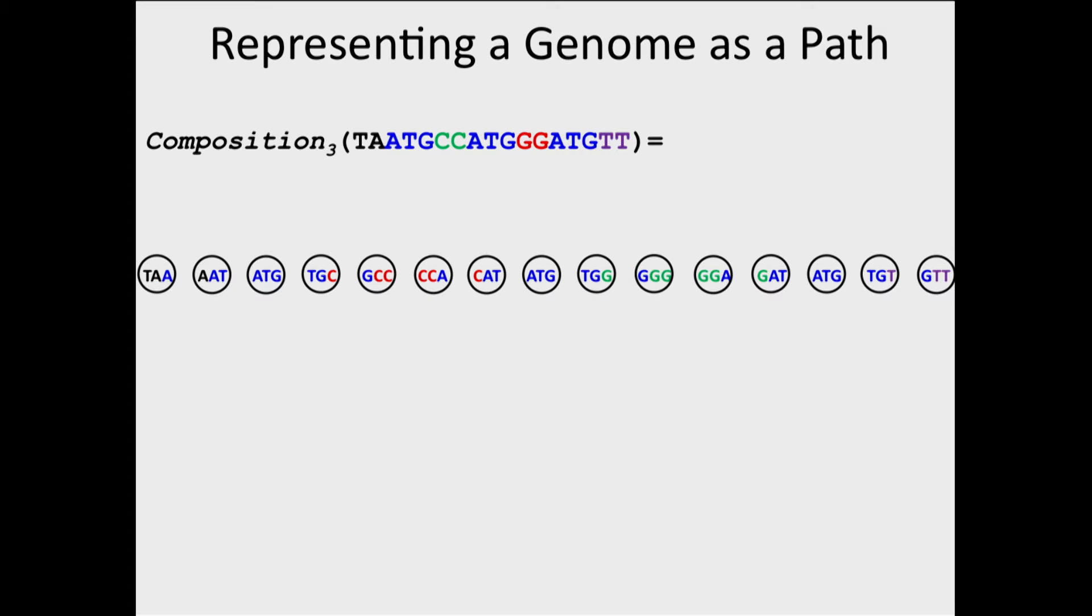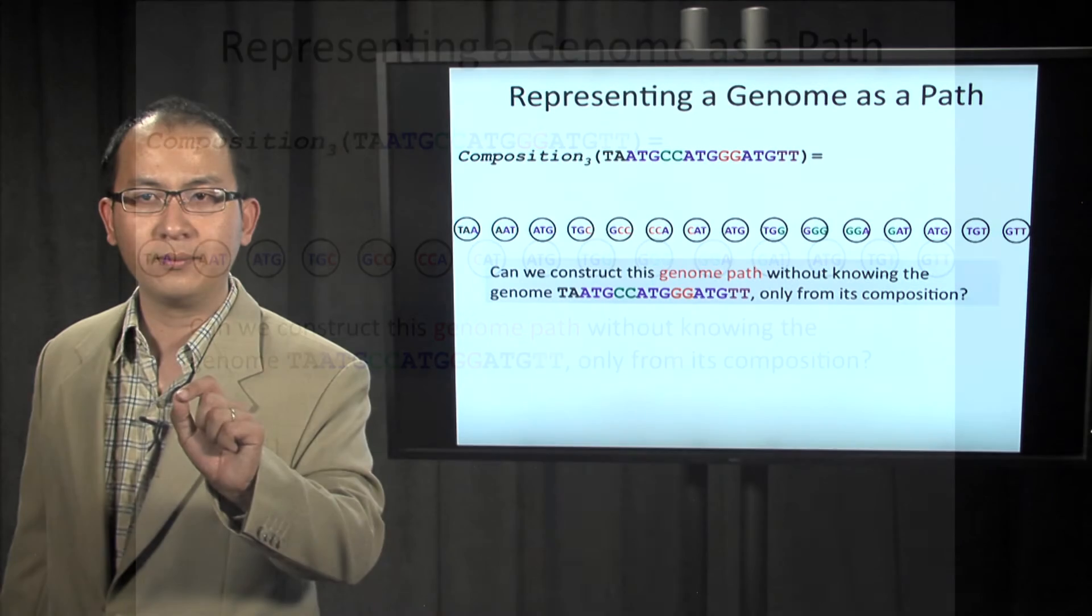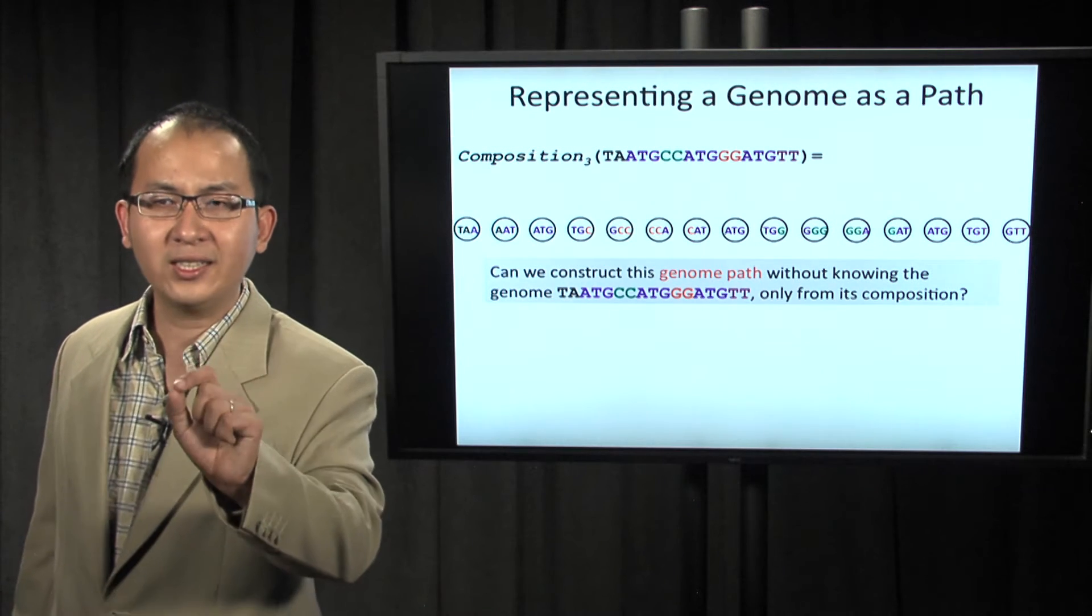If we represent each k-mer as a node, then the genome is a path through all the nodes. But can we construct this path without knowing the genome, only from its composition?